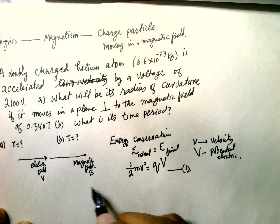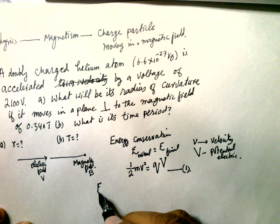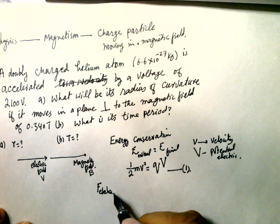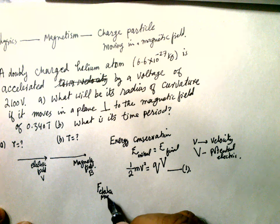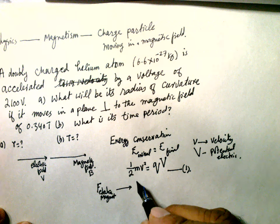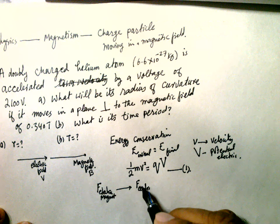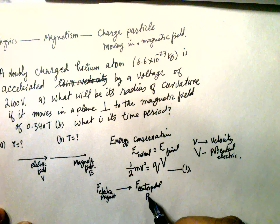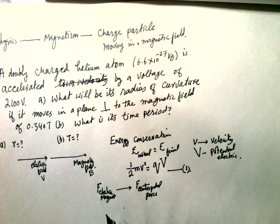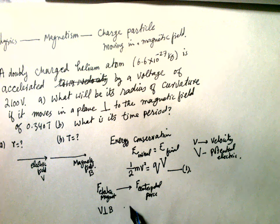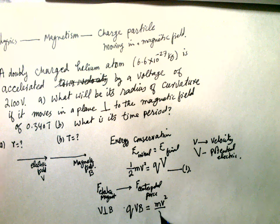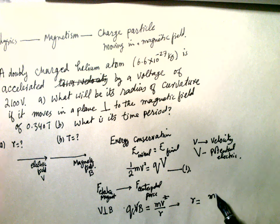Now in the magnetic field, the magnetic force acts as a centripetal force. Since velocity v is perpendicular to B, the force equals qvB, which equals mv²/r. Canceling one v from both sides gives us r = mv/qB. This is equation two.